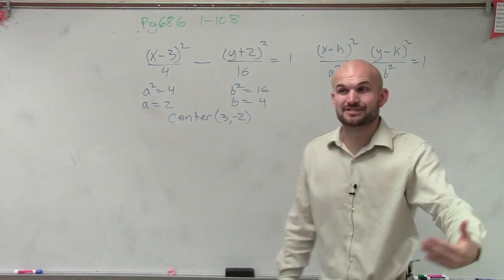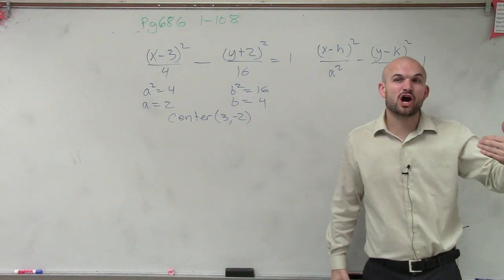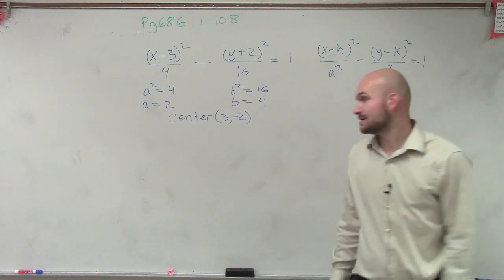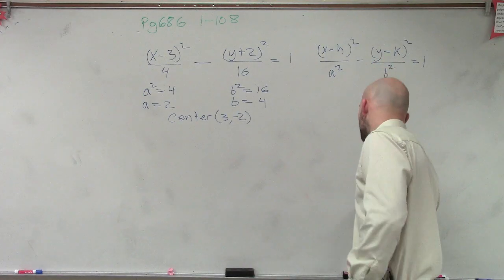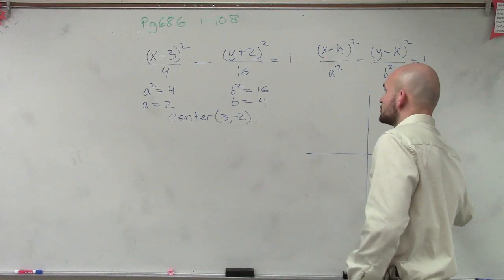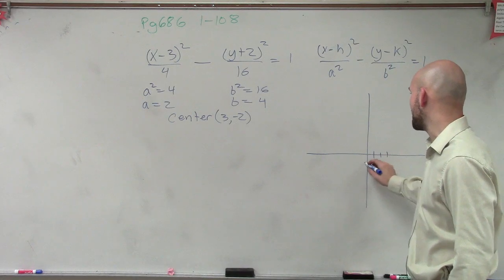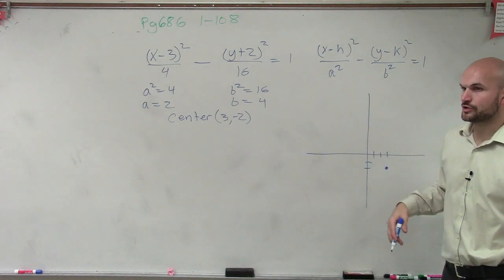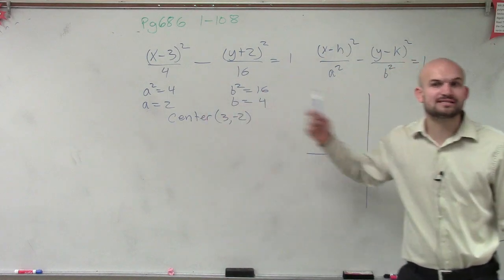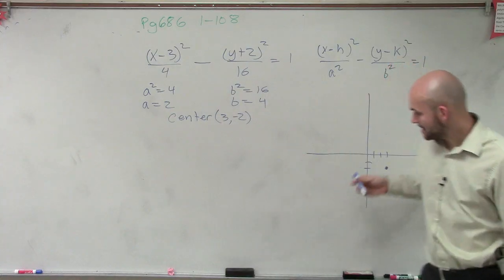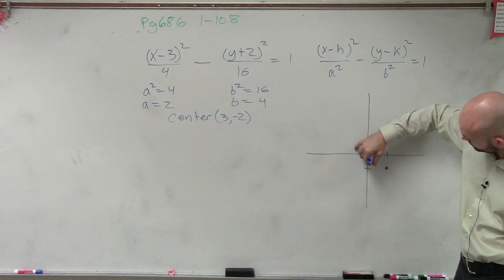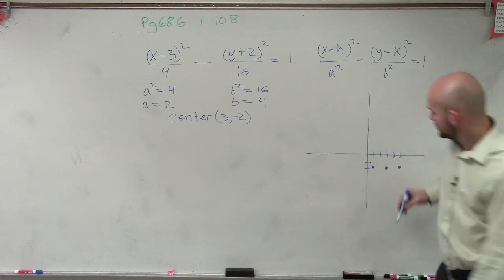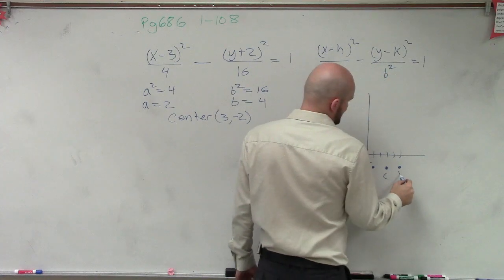So just by doing that, ladies and gentlemen, we can plot a pretty good graph. However, they are asking us to determine what our foci are and to graph using our asymptotes. So let's just graph this. My center is at (3, negative 2). My a is going to be 2. Since we determined that this is a horizontal transverse axis, I'm going to go over 2 units to the right and 2 units to the left. So here are going to be my two vertices.